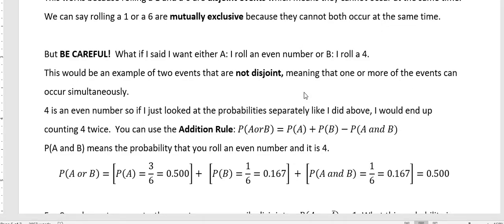So the probability of A and B means the probability that you roll an even number, and it is a four. So that's what this overlap is, that you rolled your even number, and that even number happens to be a four. So to get this probability using the addition rule, we would say the probability of A, which there's three evens out of every six, so that's half, or 0.5.